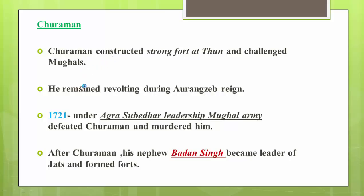All these Jat leaders kept challenging the Mughals. Churaman kept revolting during the time of Aurangzeb and was defeated by the Mughal army under the Subedar of Agra, who captured and murdered him in 1721. These dates are not very important, but knowing the chronology of events is helpful. After Churaman came his nephew Badan Singh, who became the leader of the Jats.